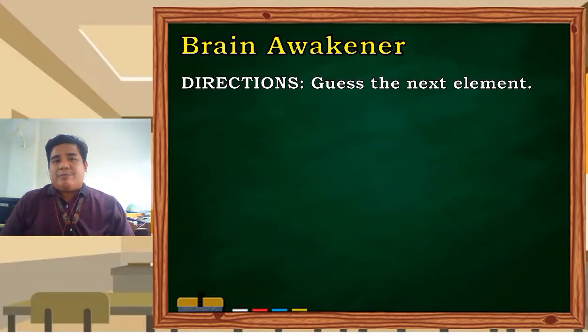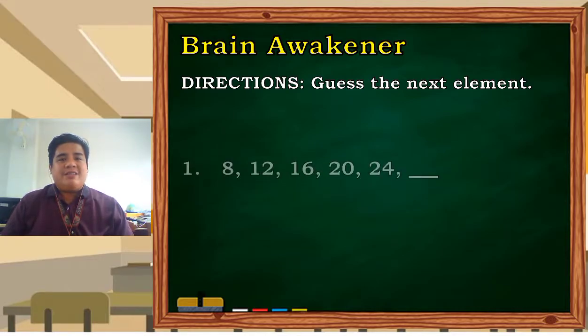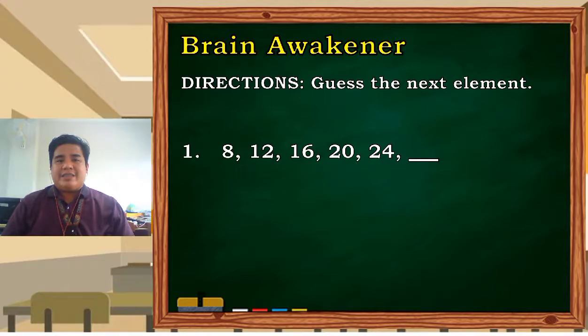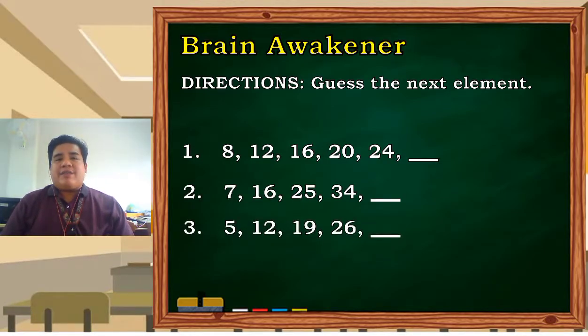As a review of the previous lesson that we have discussed regarding patterns and sequences, let's do this: guess the next element. First: 8, 12, 16, 20, and 24. What do you think are the three next elements? What about the second one: 7, 16, 25, 34. And the last one: 5, 12, 19, 26. Can you get the next elements?